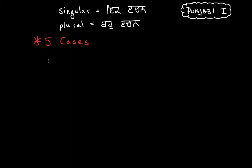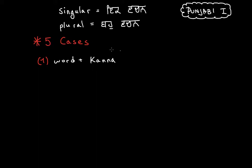I will use a chemistry-style notation, like an equilibrium reaction, as I did in the previous video. For the first case, the singular word ends with a 'canna.' To make it plural, the word remains the same, but instead of the 'canna,' we put a 'lama.' For example, 'alla' becomes plural — just replace the 'canna' with a 'lama.' We can also go back from plural to singular.